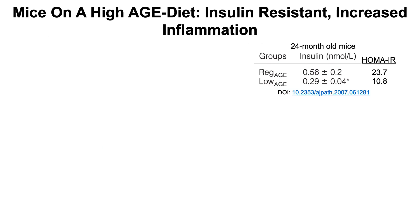What about insulin resistance and inflammation? Looking at insulin levels in 24-month-old mice fed a high or low AGE product diet for their lifespan, the mice on the low AGE product diet had about half the insulin levels. Glucose levels weren't different between the groups, but the HOMA-IR index — essentially insulin times glucose — was 23.7 for the regular AGE product diet, more than double the value for the low AGE product diet, suggesting the animals on the low AGE product diet were more insulin sensitive.